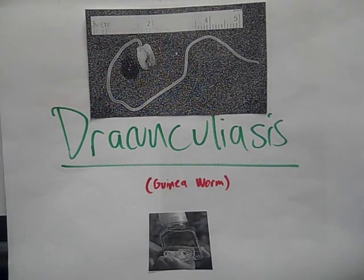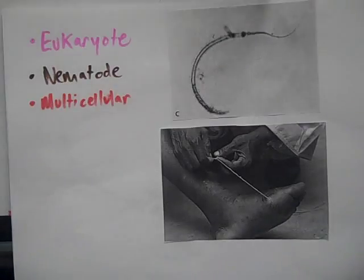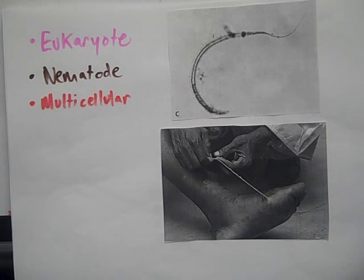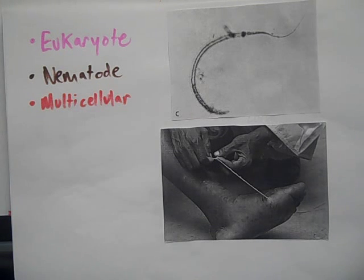This is Dracunculiasis, which is also known as the guinea worm. This worm is a multicellular eukaryotic organism and is also a nematode in the class of worms.